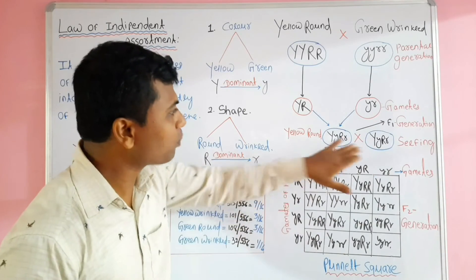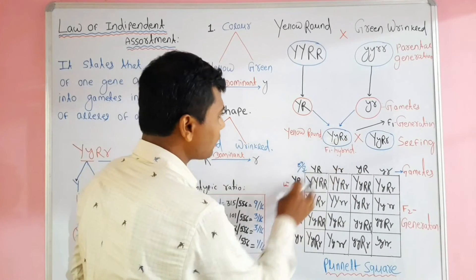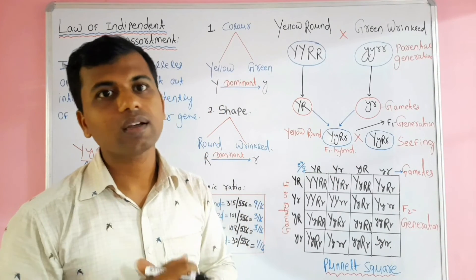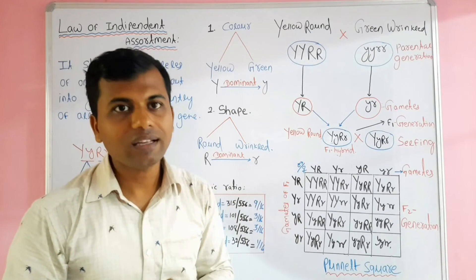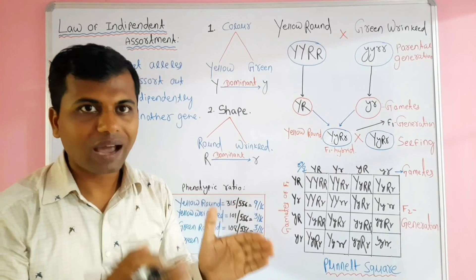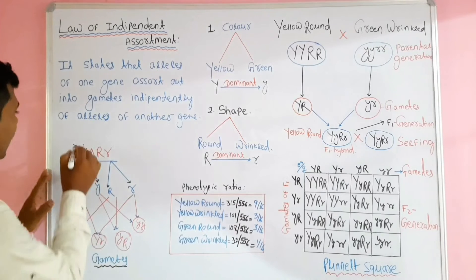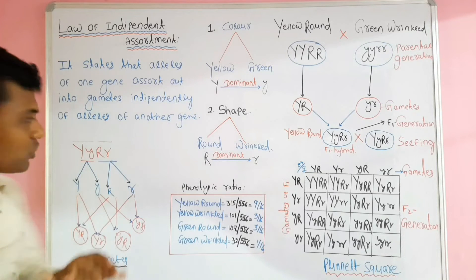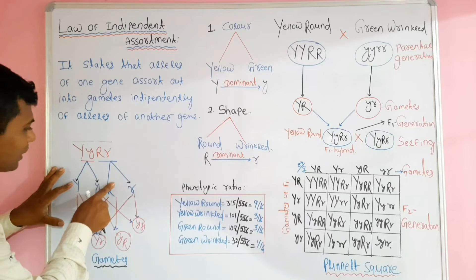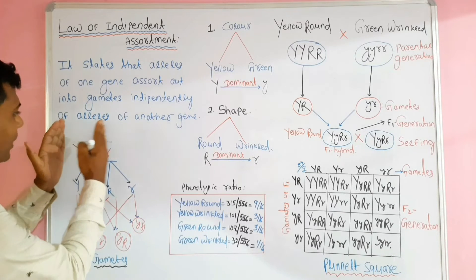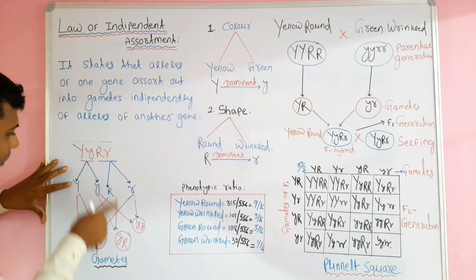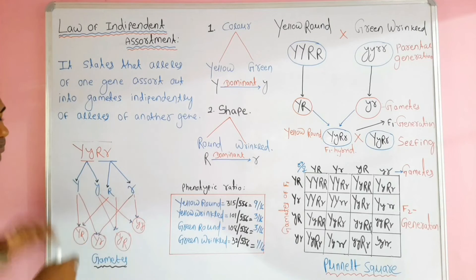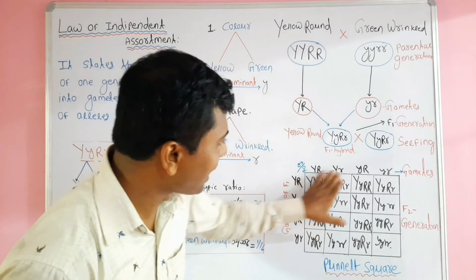Mendel then allowed self-pollination of this F1 hybrid. During self-pollination, this F1 hybrid forms four types of gametes: capital Y capital R, capital Y small r, small y capital R, and small y small r. To understand this, we must first understand the rules of gamete formation. During gamete formation, alleles for the same character separate, and then combine with alleles of another character to form the gamete. Capital Y and small y are the two alleles for color; capital R and small r are the two alleles for shape. During gamete formation, capital Y and small y separate, and capital R and small r separate. After that, alleles for color combine with alleles for shape to form the four types of gametes. These gametes combine randomly to produce plants of the F2 generation.